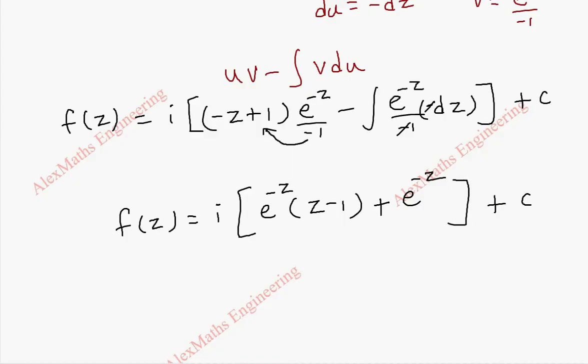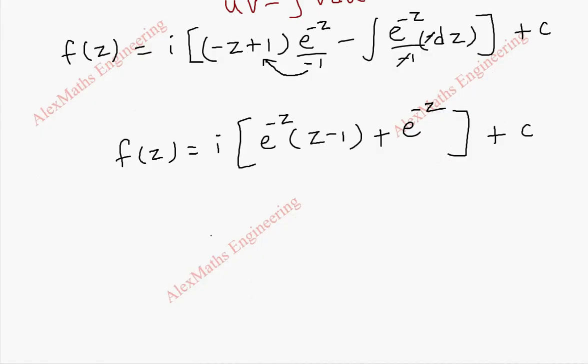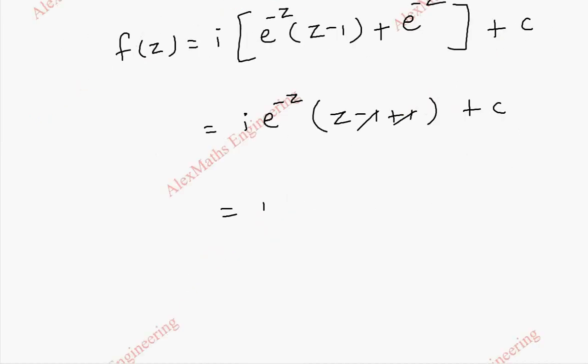Close the bracket, plus c. Now we can take e power minus z common. After taking common, it is z minus 1 plus 1 plus c. Cancel this. So this is i e power minus z plus c. This is our f of z. And after cancelling that one, we have z. So f of z is i z e power minus z plus c.